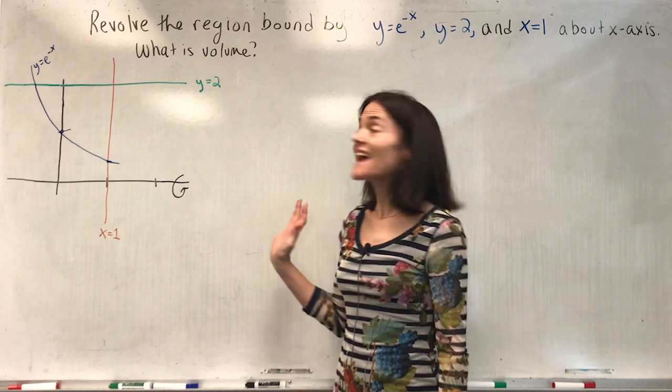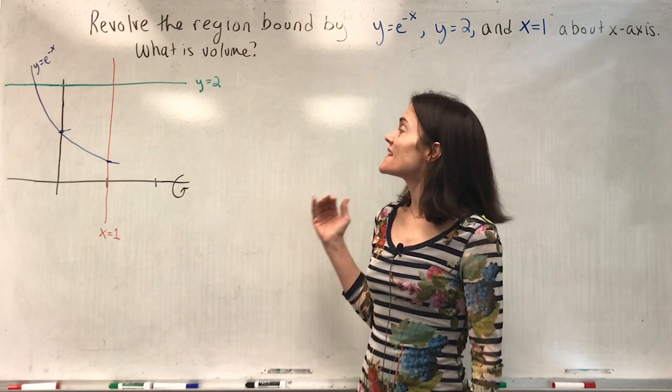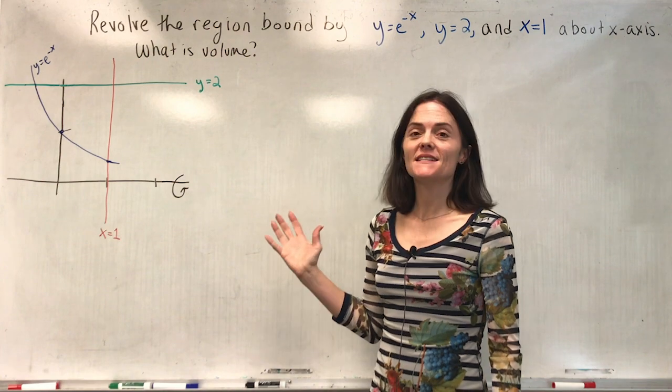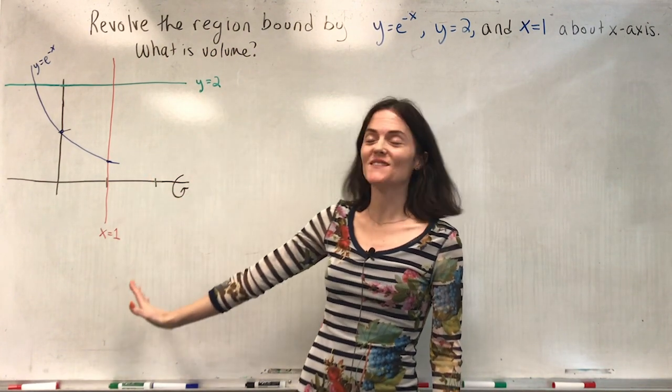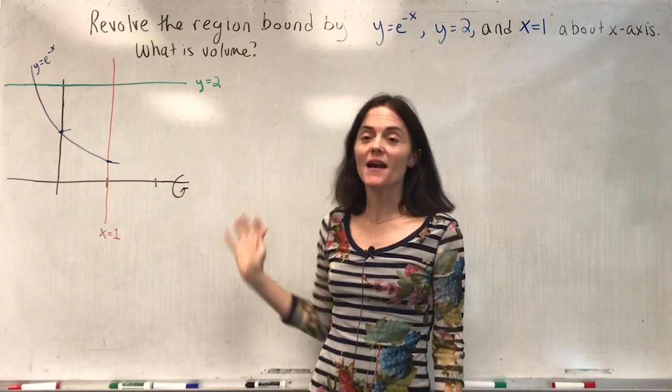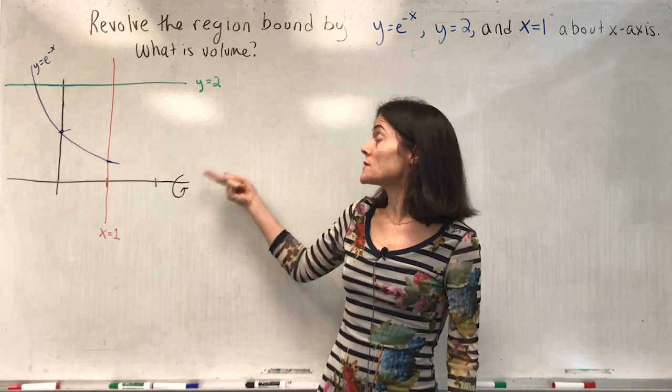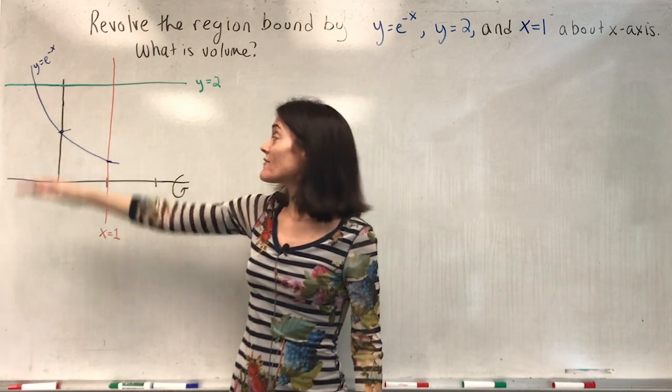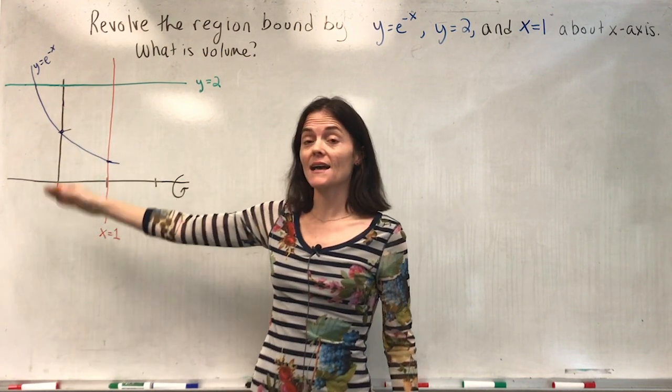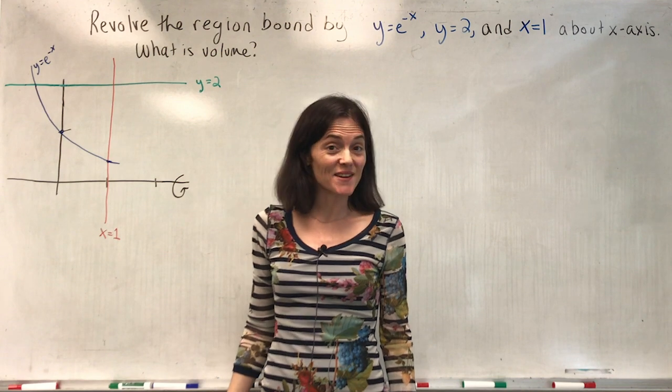Let's practice some volume calculations. In this one we want to revolve the region bound by e to the minus x, y equals 2, and x equals 1. I have graphed the three. We will take this region, and you can see it here, and revolve it about the x-axis. This creates a solid of revolution.